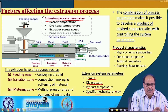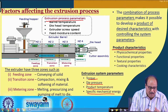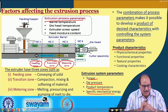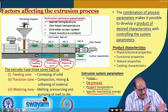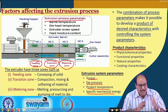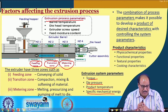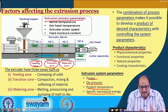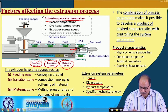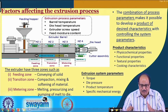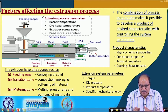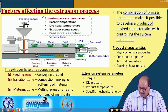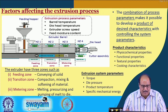In the extruder, you can see there is a feeding zone, a transition zone, and a metering zone. The feeding zone is used for conveying the solid; in the transition zone, compaction, mixing and softening of the material takes place; whereas in the metering zone there is melting, pressurizing, pressing and pumping of the melt to the die. At the die end there is a cutter assembly which cuts the product into the desired size.